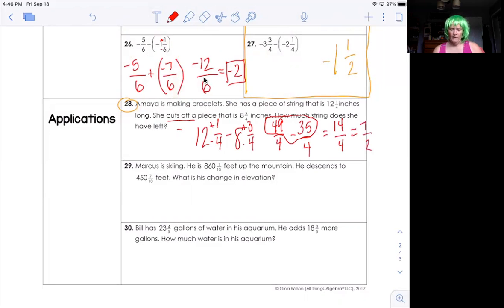Now it would be really weird if Amaya said I have seven halves inches of string left, right? So again, we got to turn it into a mixed number because we don't talk about string like that. So mixed number is three and a half. And then don't forget your units inches. So she has three and a half inches of string left.